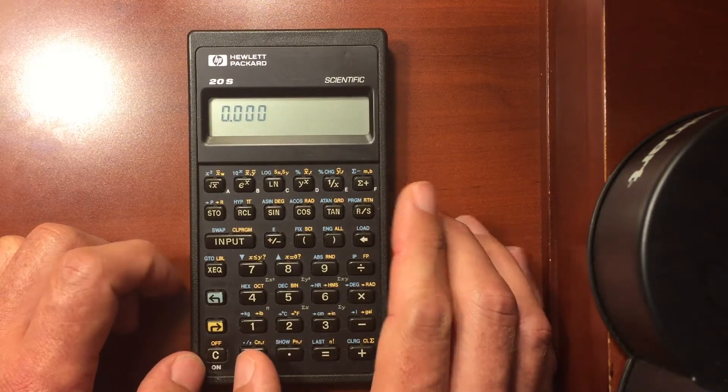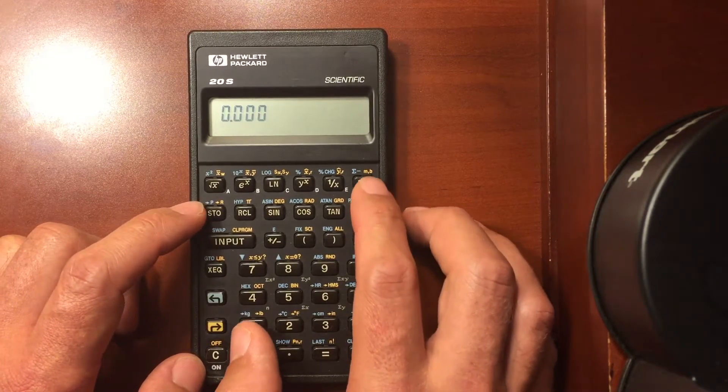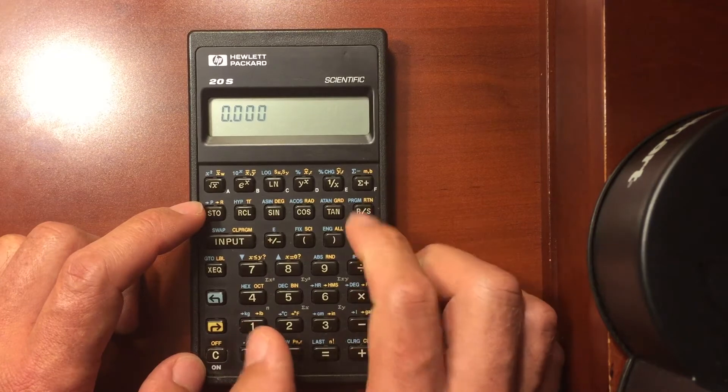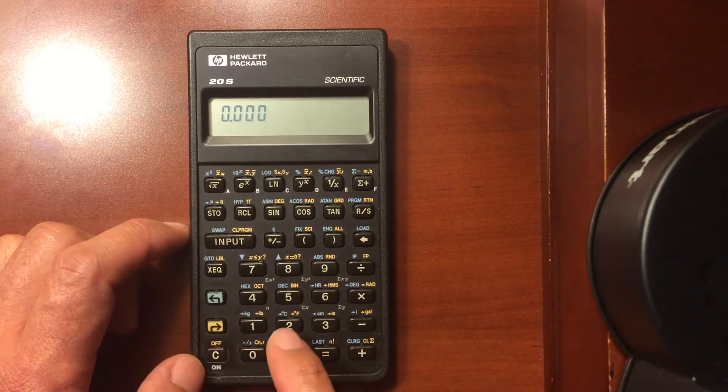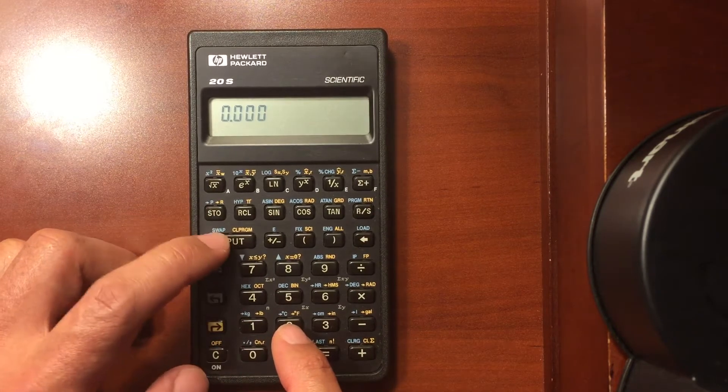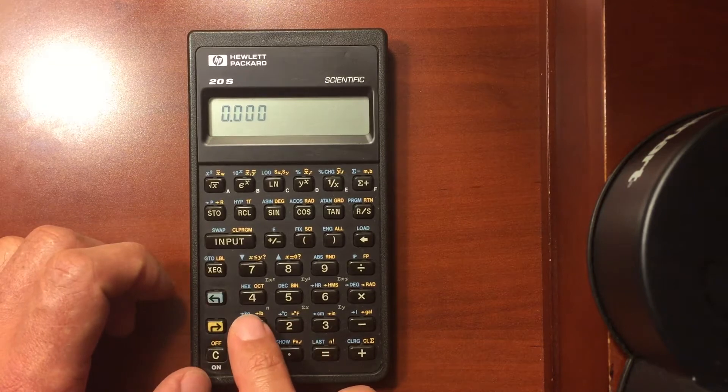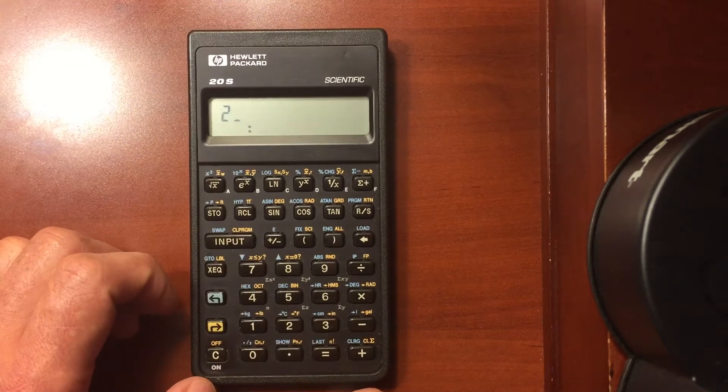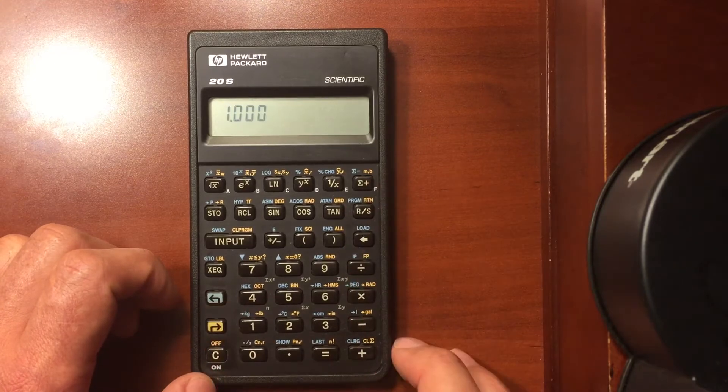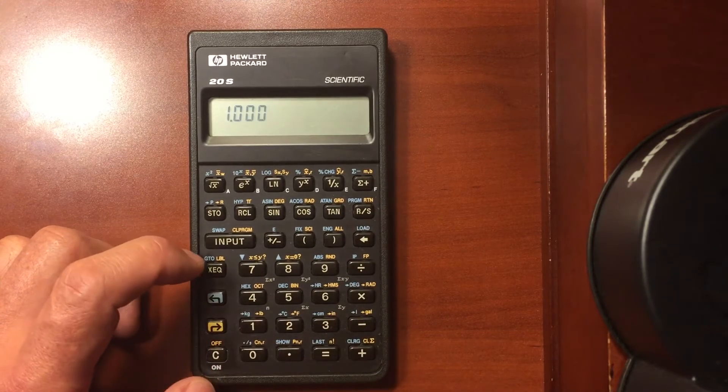So first I guess we could go through statistics. So you have your statistics register and you can enter in your x and your y value and that's what you would use your input for. So I could do 1 and then 2 and enter both of those into my register. And I've got 1 value in the register.